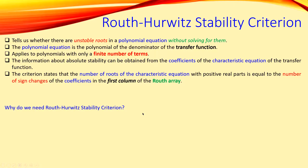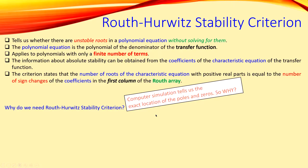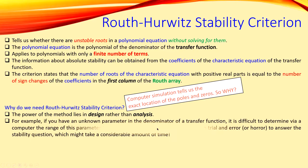But why do we need Routh-Hurwitz stability anyway? We can of course use a computer, simulate it, and get the exact location of the poles and zeros. The power of this method lies in design rather than analysis. We would like to design for a specific proportional control gain to achieve stability. If you have an unknown parameter in the denominator of your transfer function, it can be difficult to determine via simulation the range of this parameter for stability. You could try trial and error, but that might take a considerable amount of time.